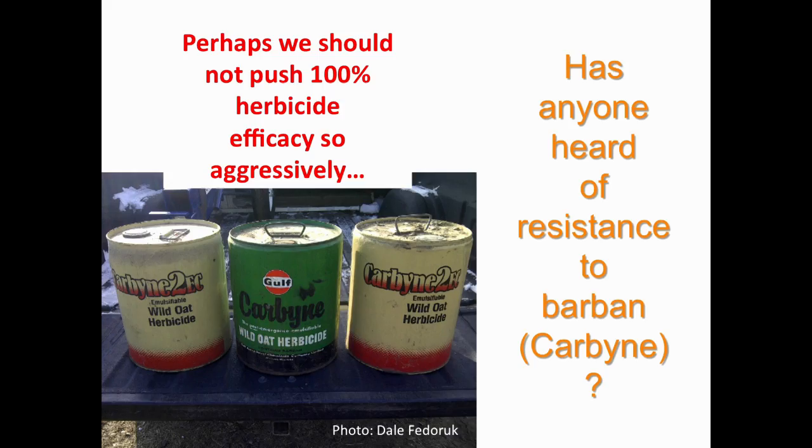Here's an older herbicide that you old-timers will remember—do any of you remember having resistance to that herbicide? There was none. Why? It wasn't effective enough; it didn't select enough of the susceptibles. Maybe we shouldn't think too strongly about needing 99% control to save and protect yield. That herbicide did pretty well at protecting yield, and it let a few susceptibles through, so we didn't select so fast. Perhaps we shouldn't pay attention to herbicide ads that suggest we need a totally clean field to protect our yields.